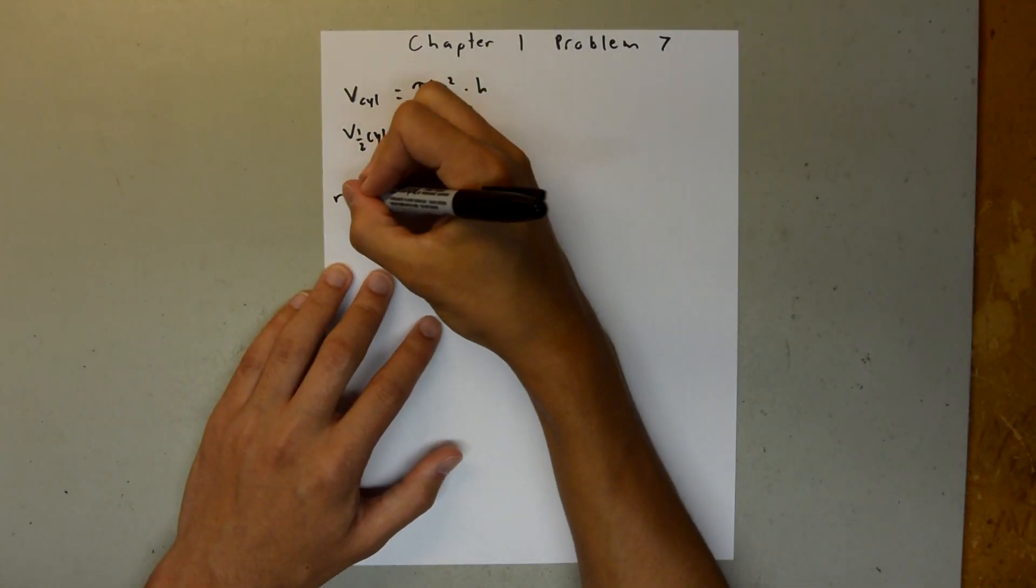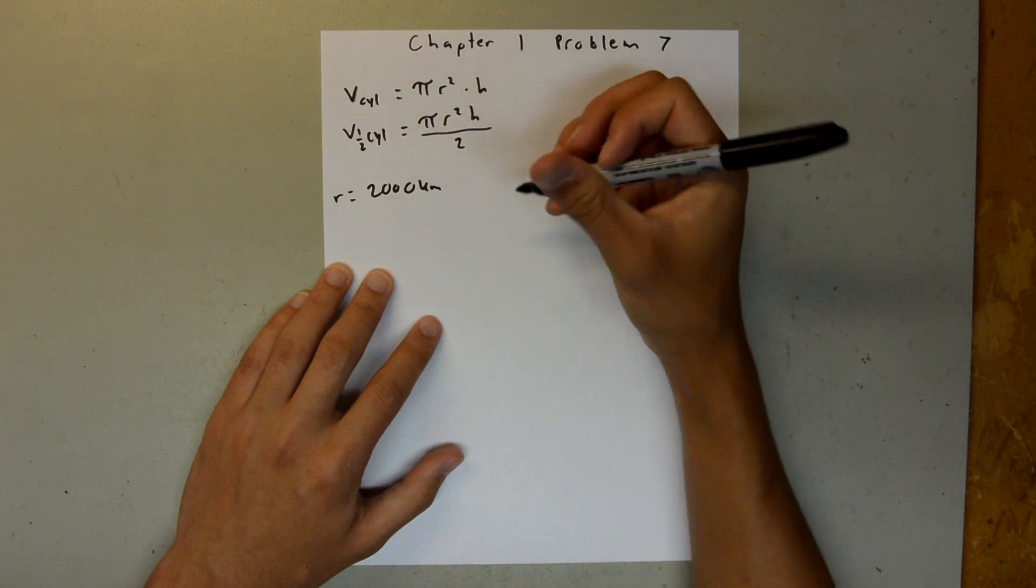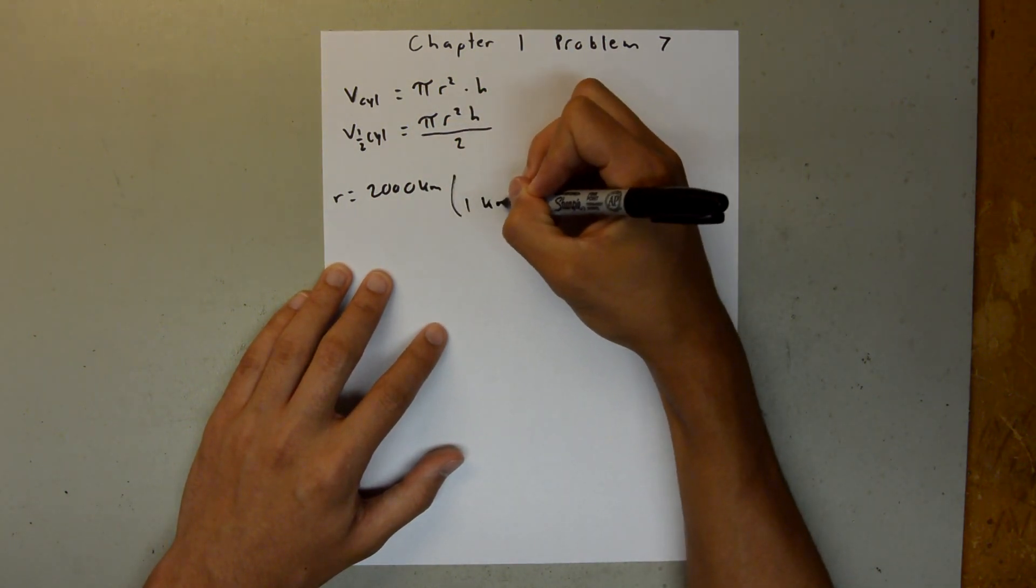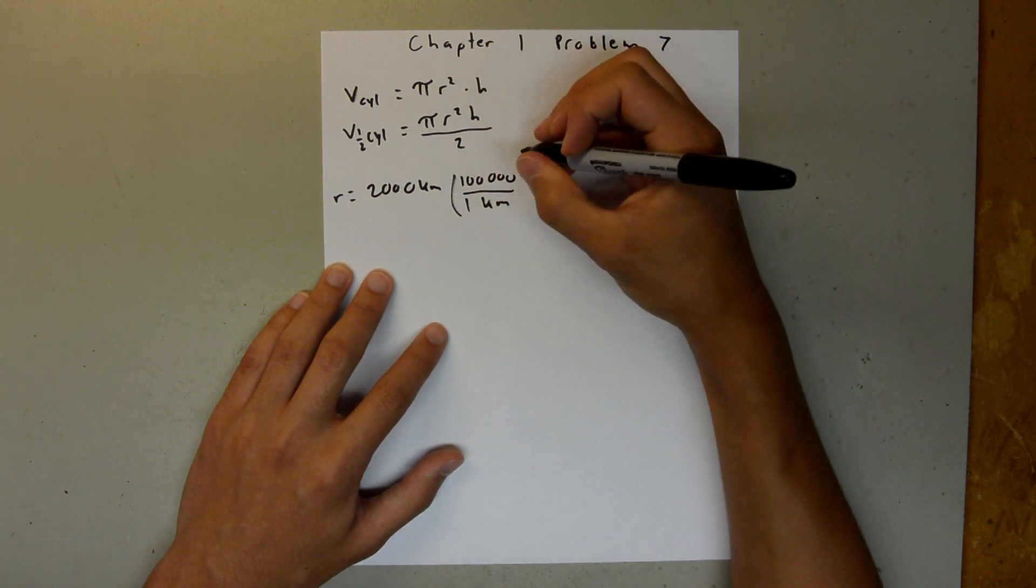We are told that the radius is 2,000 kilometers, and we know that 1 kilometer is equal to 100,000 centimeters.